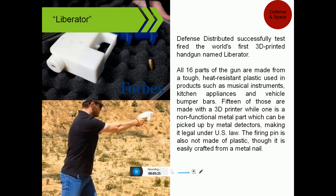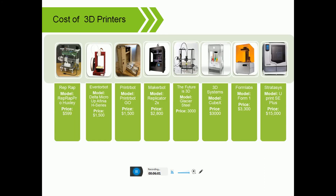Defense Distributed successfully tested and fired the world's first 3D-printed gun, named the Liberator. All 16 parts of the gun are made through high-resistance plastic, used also in products such as musical instruments, kitchen applications, and car bumpers. However, the non-functional metal part can be picked off by a metal detector, making it illegal under US law. The firing pin is not made of plastic — it is easily crafted from metal alloy.